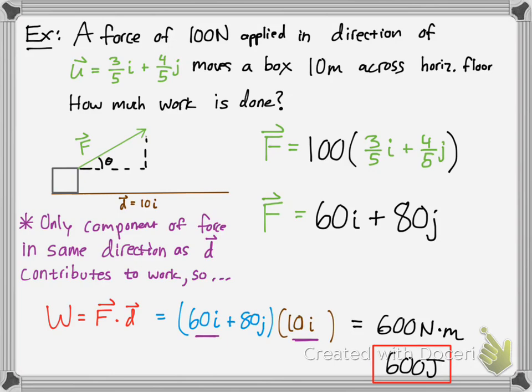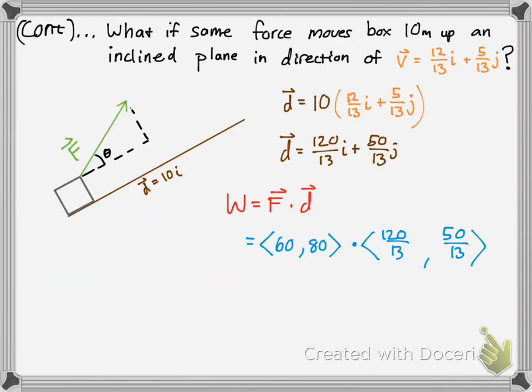So 60, 80 was our force, 60i plus 80j in vector notation, times the distance which we just figured out above. Using the shortcut method from the previous part of this video, you simply multiply these two components.